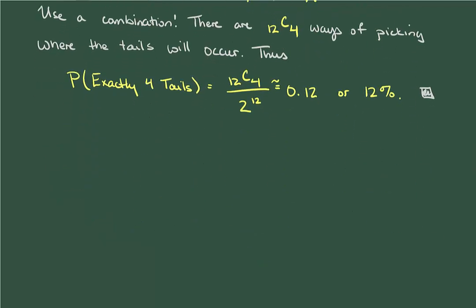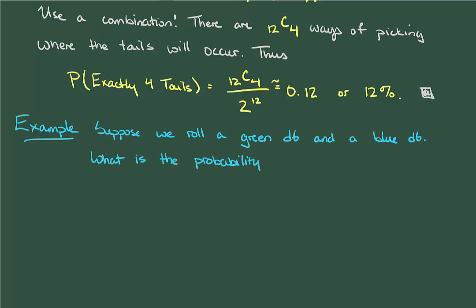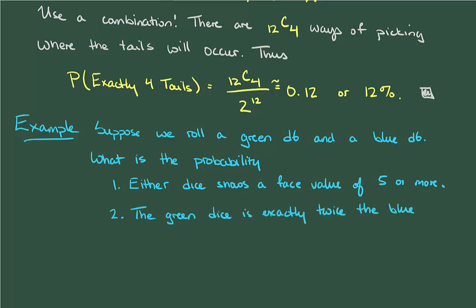So that's an example where counting was critical. In the next example, we could do it by counting, but we'd need to be extra careful. Let's suppose that we roll a green D6 and a blue D6, and let's compute two different probabilities. The first is the probability of either dice showing a value of 5 or more.